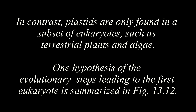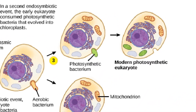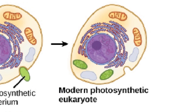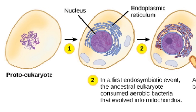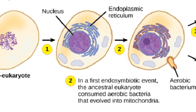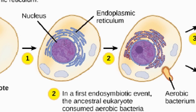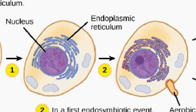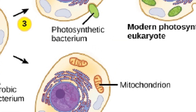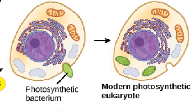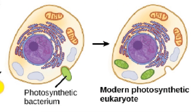One hypothesis of the evolutionary steps leading to the first eukaryote is summarized in Figure 13.12. The first eukaryote may have originated from an ancestral prokaryote that had undergone membrane proliferation, compartmentalization of cellular function into a nucleus, lysosomes, and an endoplasmic reticulum, and the establishment of endosymbiotic relationships with an aerobic prokaryote and, in some cases, a photosynthetic prokaryote to form mitochondria and chloroplasts, respectively.